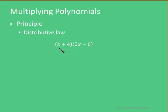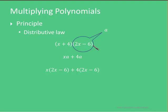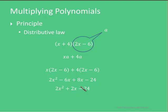Here is a little example. We have (x plus 4) times (2x minus 6). We substitute a for 2x minus 6, which gives us x times a plus 4 times a. We then remember that a is actually 2x minus 6, so we are saying x times all of this, plus 4 times all of this — applying the distributive law repeatedly. Continuing: x times 2x gives us 2x squared, x times minus 6 gives us minus 6x, 4 times 2x gives 8x, 4 times minus 6 gives minus 24. Simplifying: 2x squared plus 2x minus 24.